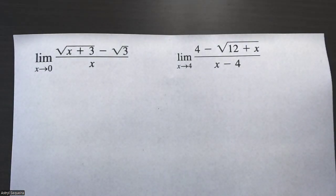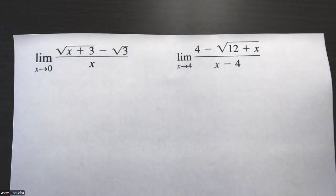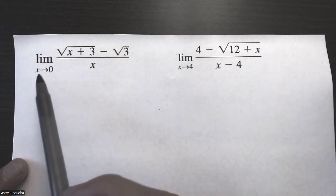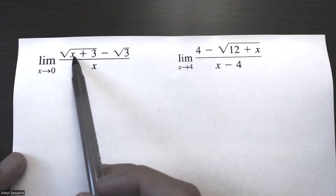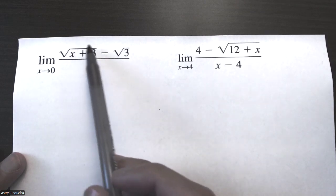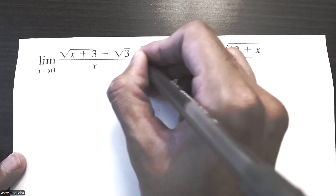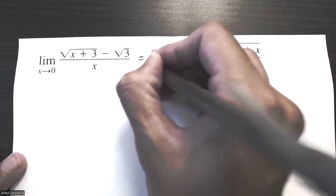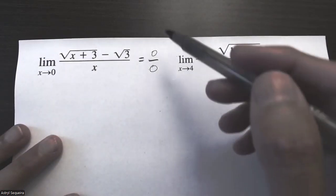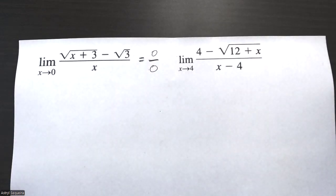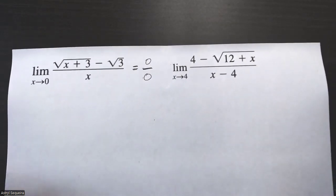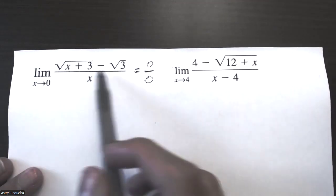In this video we are going to evaluate limits with radical expressions. Let's take a look at the first one. The first thing I do is sub in my limit, so if I sub in zero, zero plus three is three, and square root of three minus square root of three is zero. So I have zero on the top and zero on the bottom, which means this is an indeterminate form, which means I need to rationalize.